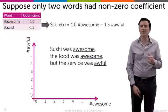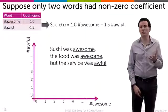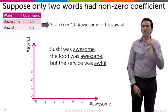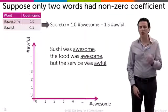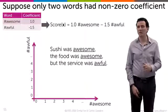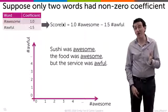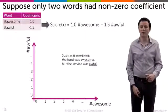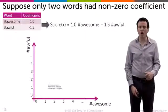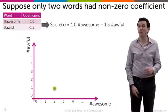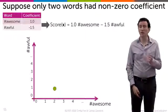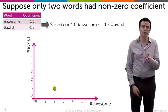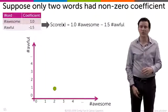For example, for a sentence like "the sushi was awesome, the food was awesome, but the service was awful" — where do I plot that? In a space where I have two awesomes and one awful, it gets plotted at the point (2, 1).